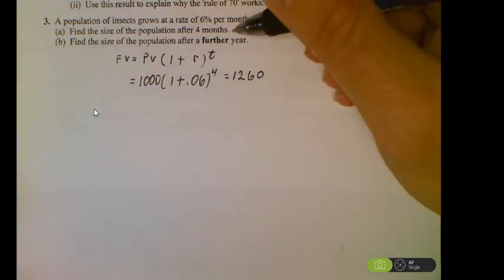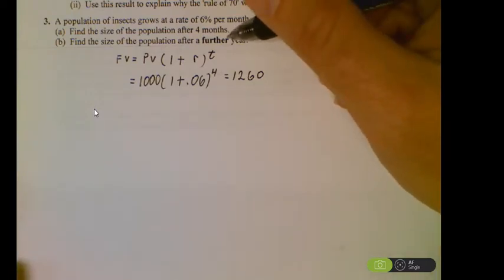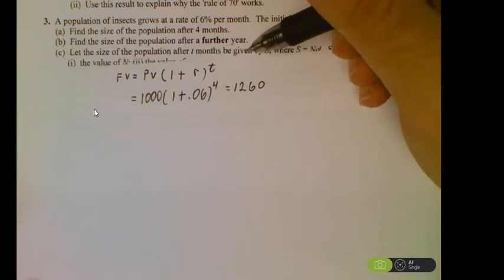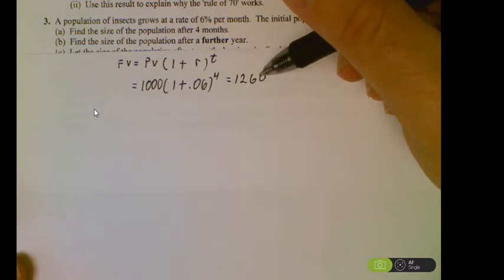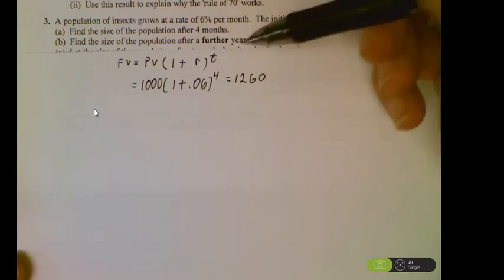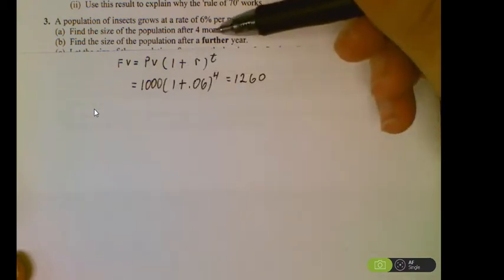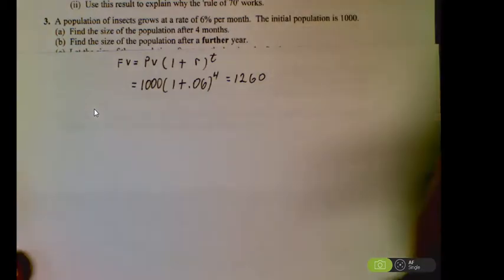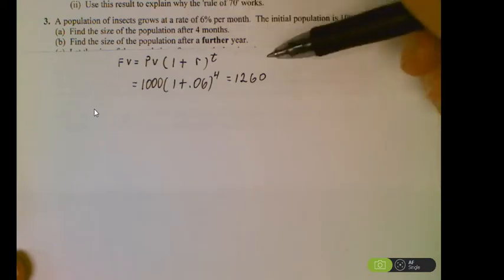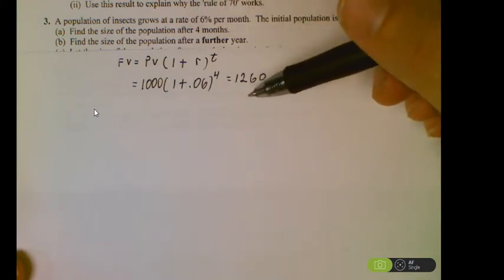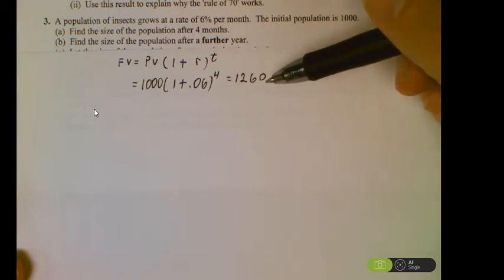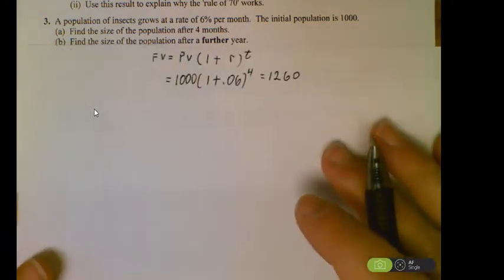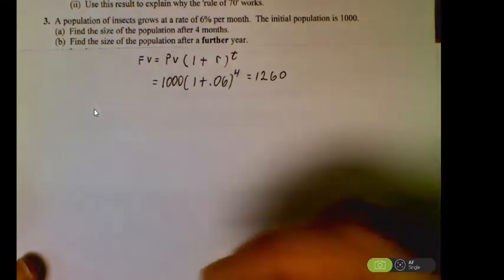Find the size of the population after a further year. So you're talking about 12 months after this. You could treat this as our present value and do an exponent of 12, or go back to the initial population and do an exponent of 16. What I like to do to play it safe is go back to the original because what if we made a mistake? We're also dealing with a rounded number. So just to play it safe, go back to the initial of 1,000.